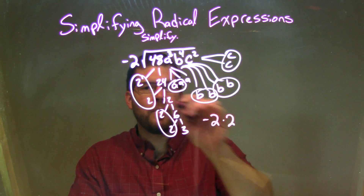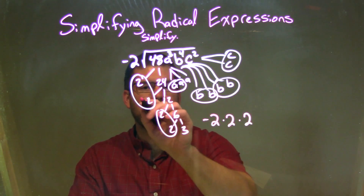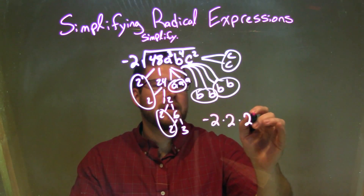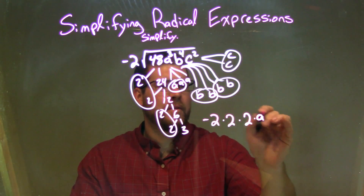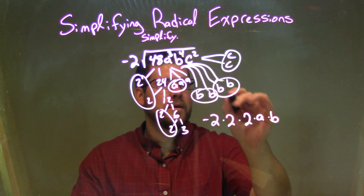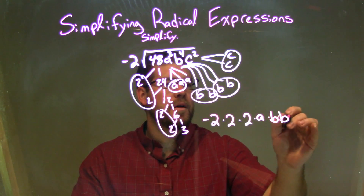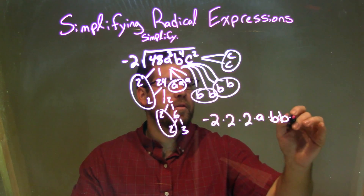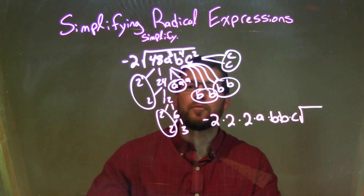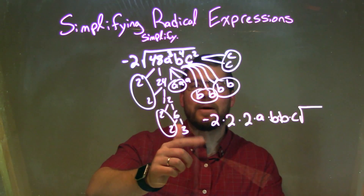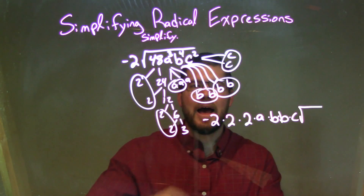So we have one pair of twos right there, another pair of twos right there — so we have these two twos — times a pair of a's, don't forget that on the inside there, times a pair of b's, another pair of b's, times a pair of c's. What's left inside the square root is just all my singles, which is a 3 and an a.